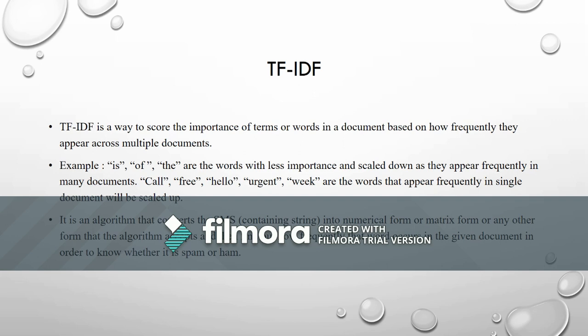TF-IDF is an algorithm that converts the input string message into numerical or matrix form so that the algorithm can accept it. It finds out how frequently each word in the text occurs in the dataset and calculates whether it is ham or spam. The probability of it being ham or spam is then calculated using the SVM algorithm.